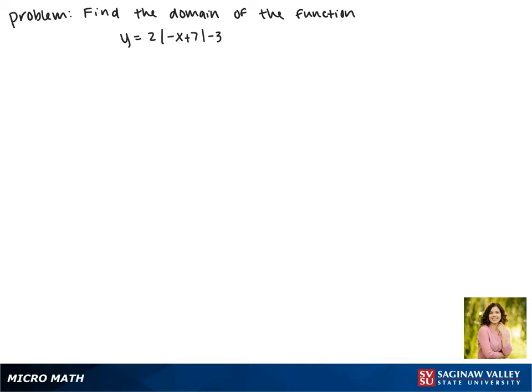Today we'll be finding the domain of the function y equals 2 times the absolute value of negative x plus 7 minus 3.